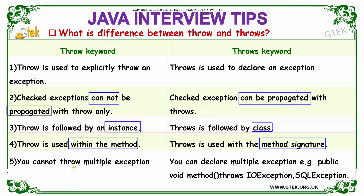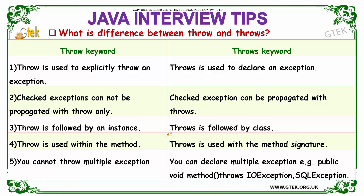You cannot throw multiple exceptions with throw, whereas you can declare multiple exceptions with throws. For example: public void method throws IOException or SQLException. So you can declare multiple exceptions with the throws keyword. These are the major points differentiating throw and throws.